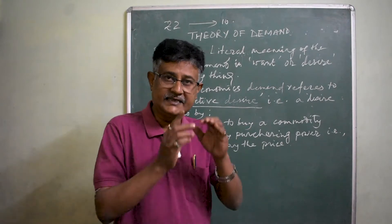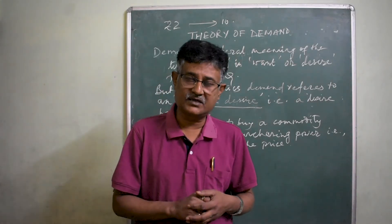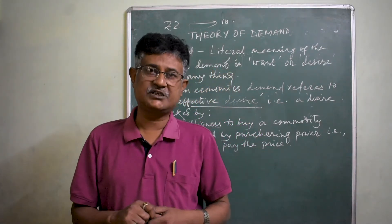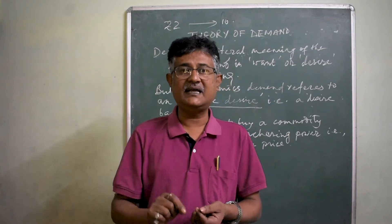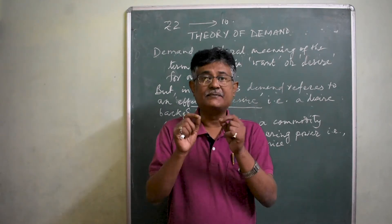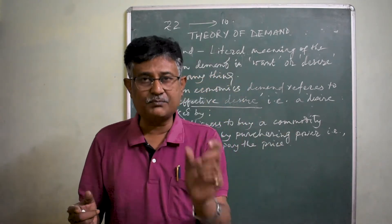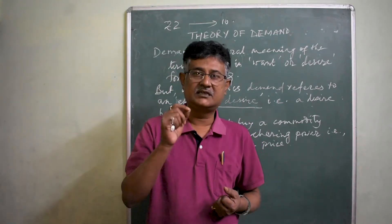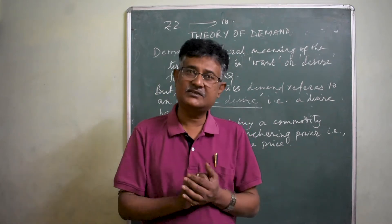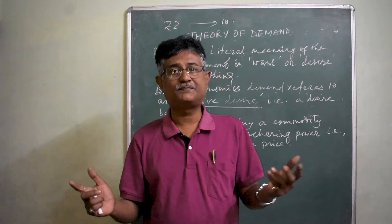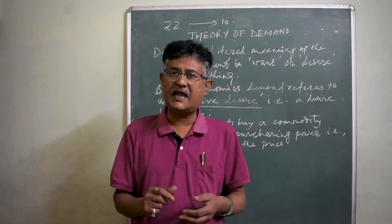The demand for a particular commodity depends upon a number of factors called the determinants of demand. The functional relationship that exists between the demand for a commodity and the various factors which determine it represents the demand function. Demand function explains the functional relationship between demand and factors like the price of the commodity, the price of related goods, the income of the households, the taste and preferences of the people, the size and composition of the population, the distribution of income, propensity to consume, and various other factors.